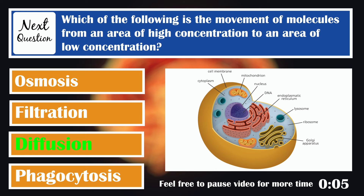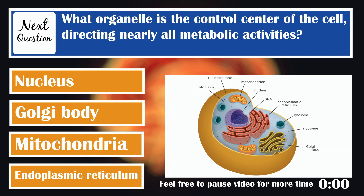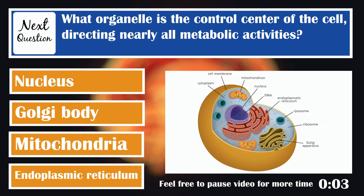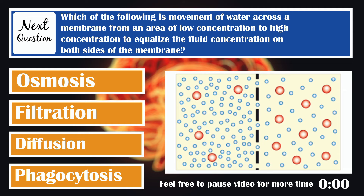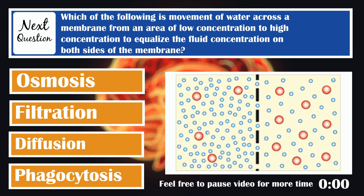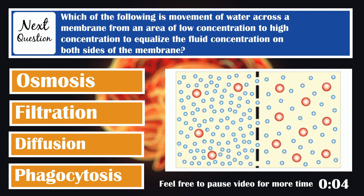What organelle is the control center of the cell directing nearly all metabolic activities? The nucleus is the cell's control center. Which of the following is the movement of water across a membrane from an area of low concentration to high concentration to equalize the fluid concentration on both sides of the membrane? Osmosis is the movement of water across a cell membrane from an area of low concentration to high concentration to equalize the fluid.